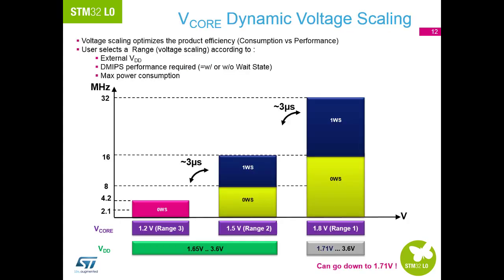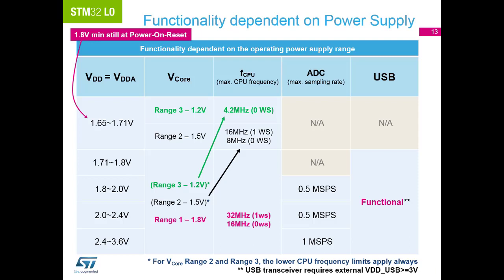Dynamic voltage scaling is a method to optimize the power consumption versus performance. The voltage range to the core can be changed by software to optimize the power profile of the end application. This will vary the maximum operating frequency and power consumption per megahertz of the device, but will also give you the ability to run the device at different frequencies with zero wait states. The voltage that is supplied to the device also governs the maximum voltage supplied to the core. Certain peripherals like the ADC and USB also rely on the supply voltage of the device to be above specific values to function and or to function at full speed.